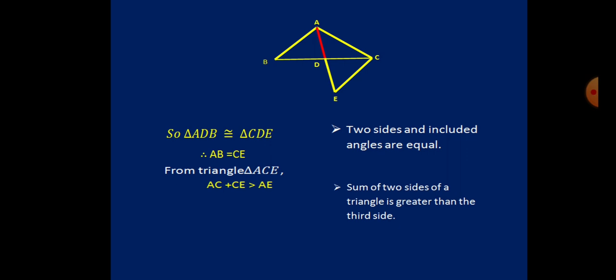AC + CE is replaced by AC + AB as the triangles are congruent. So AC + AB > AE. But AE can be represented as AD + DE, and DE equals AD by construction, so AE equals 2AD. Hence our proof: AC + AB > 2AD.